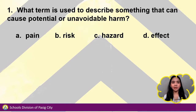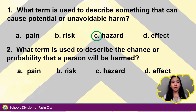Number 1. What term is used to describe something that can cause potential or unavoidable harm? A. Pain, B. Risk, C. Hazard, or D. Effect. It's C. Hazard.